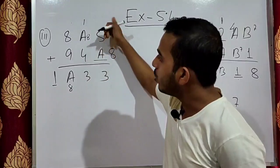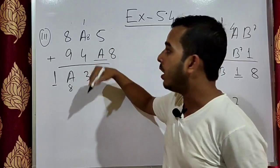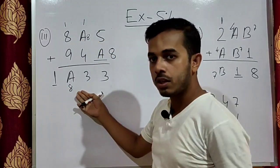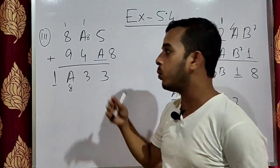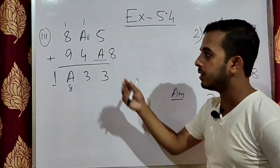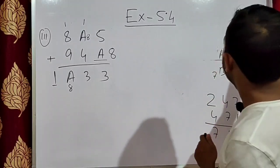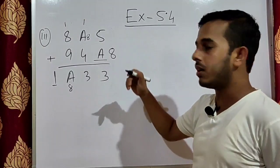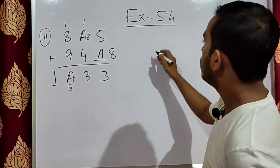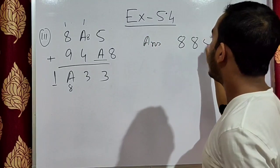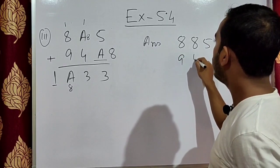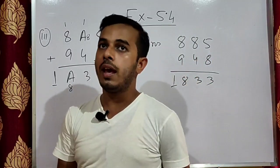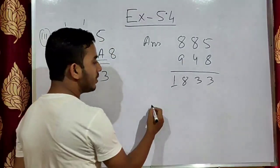Further verification: 8 plus 1 is 9, 9 plus 4 is 13, gives 3 — correct. Then 8 plus 1 is 9, 9 plus 9 is 18 — correct. The value of A is 8. Answer: 885 plus 948 equals 1833. Hence the value of A is 8.